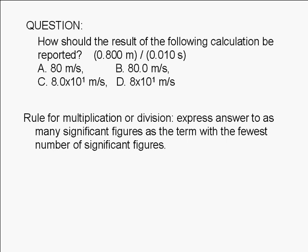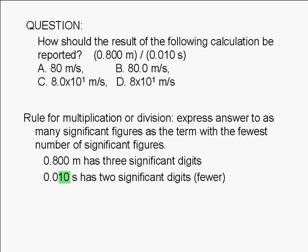Let's examine the terms given here. 0.800 meters has 3 significant digits. 0.010 seconds has 2 significant digits.